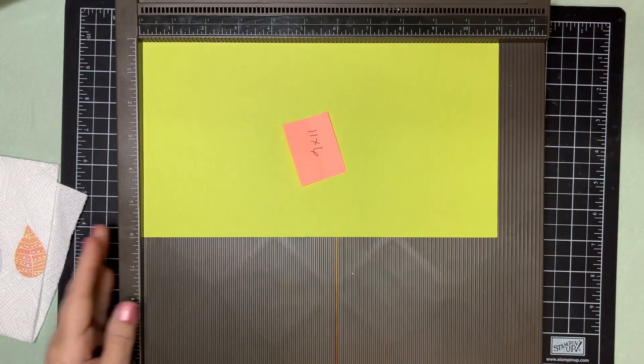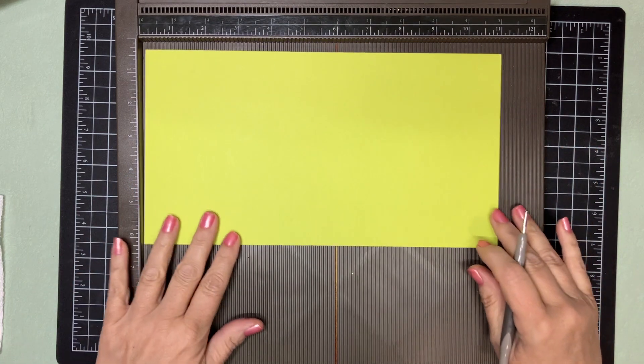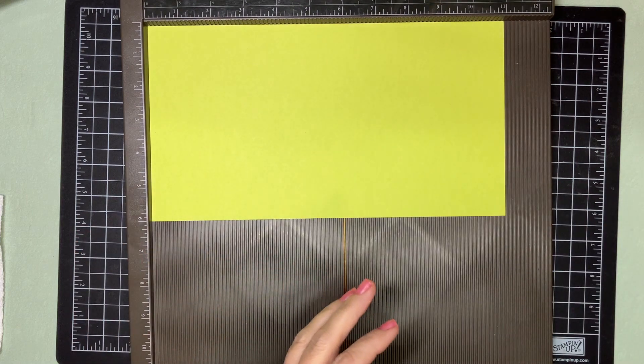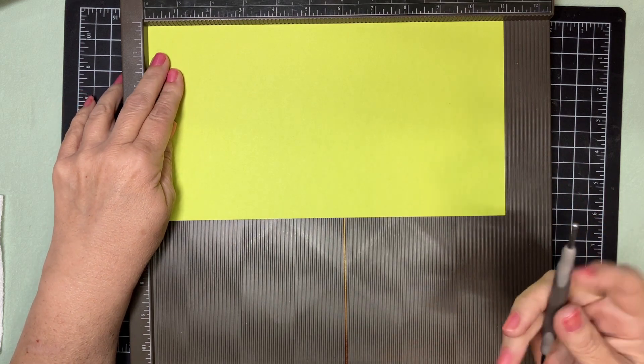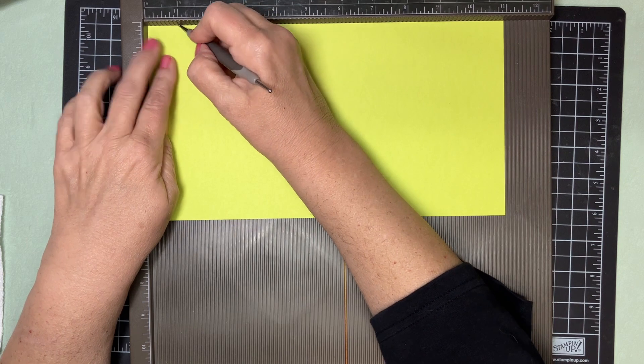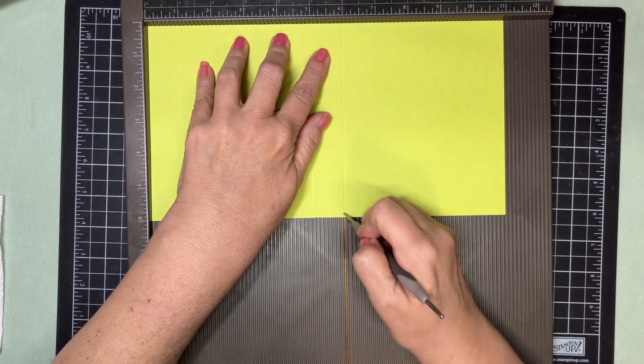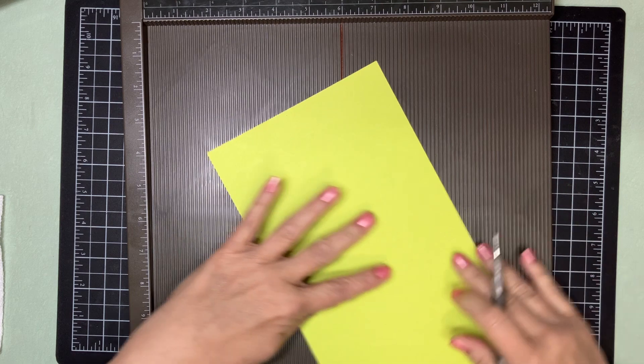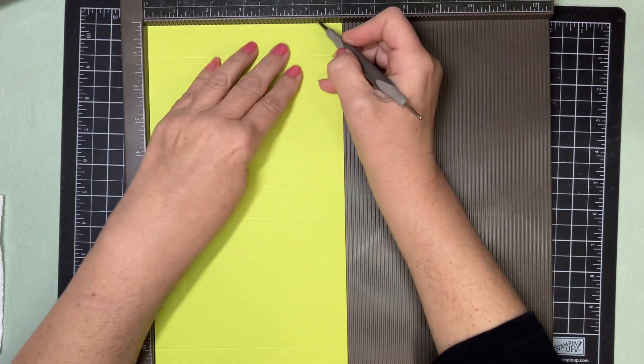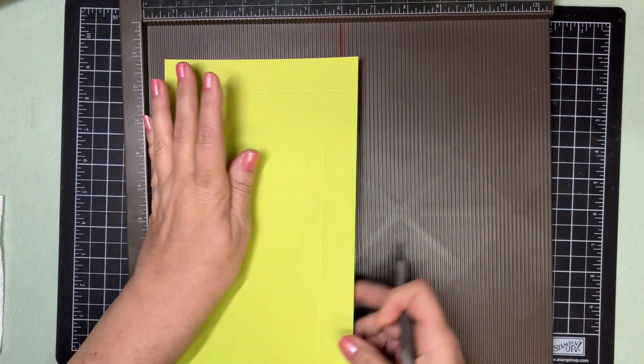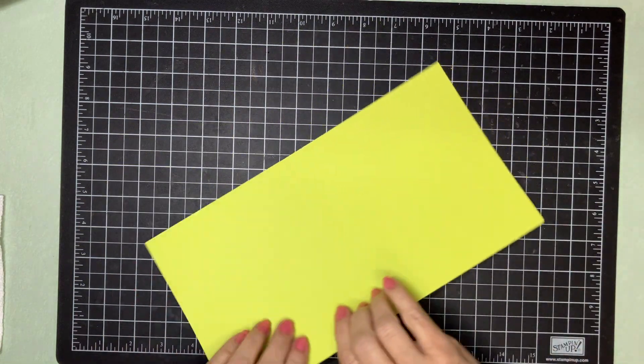So let's make our box. You need a piece of 11 by 6, and this is Lemon Lime Twist. I did not change colors today because I liked it and like I said it made me happy. On the 11 inch side we are going to score at 1, 5, 6, and 10. I'm going to turn around on the 6 inch side, so we're going to score at 1 and 5. This is a flip box. I've done flip boxes before, different sizes, just a different size, decorate a little bit different.